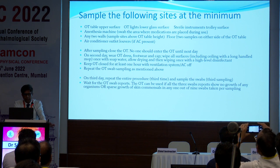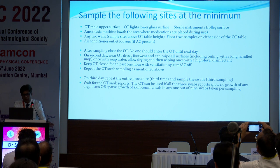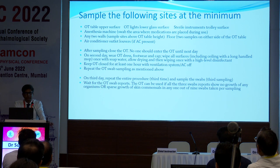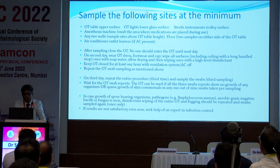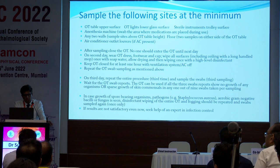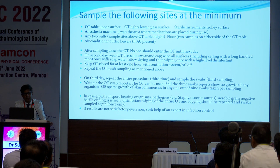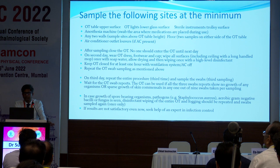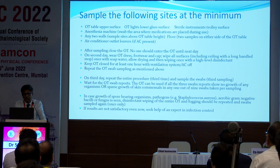This is the process for a new OT. Once you get the reports back, ensure all samples are free of any growth — there may be some spores or skin commensal growth. If there is growth of pathogens, repeat the OT cleaning and fogging process and take samples again. If results are still not satisfactory, take the help of an infection control expert.